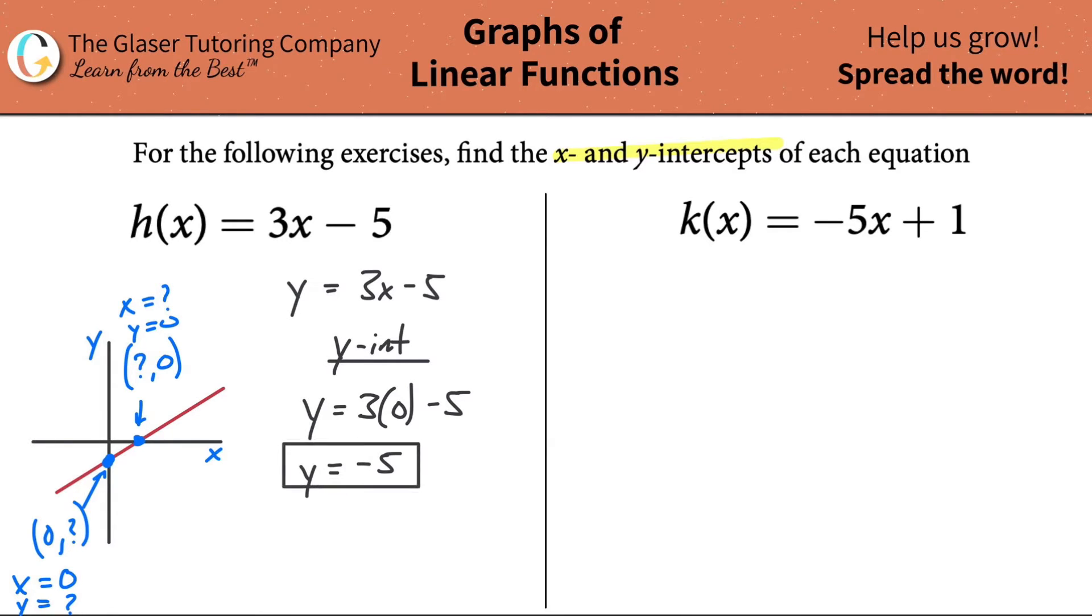So look, fairly simple. This is then the y intercept right here. Technically, the y intercept has coordinates. But remember, the x value is always zero. So if you had to write in coordinate form, it's going to be zero comma negative five. And that would represent that particular point right there.